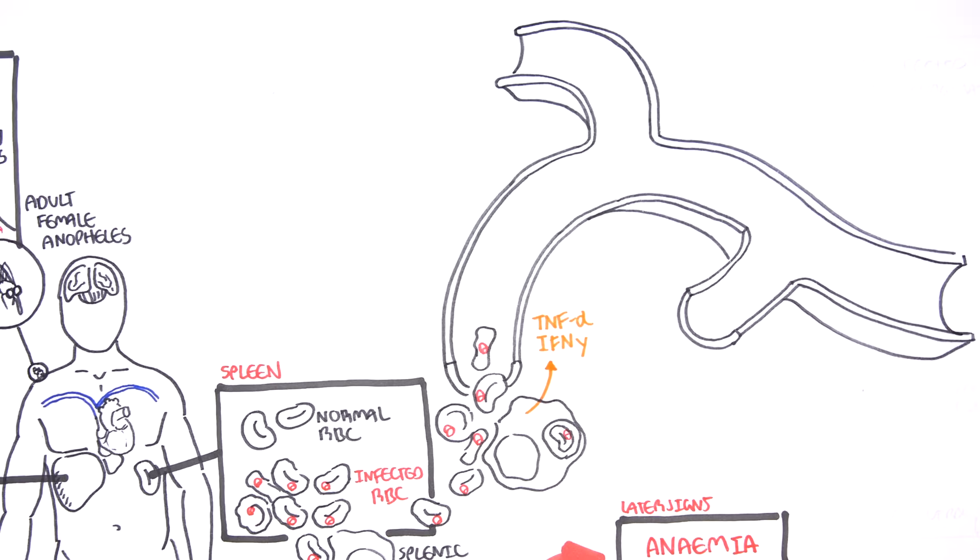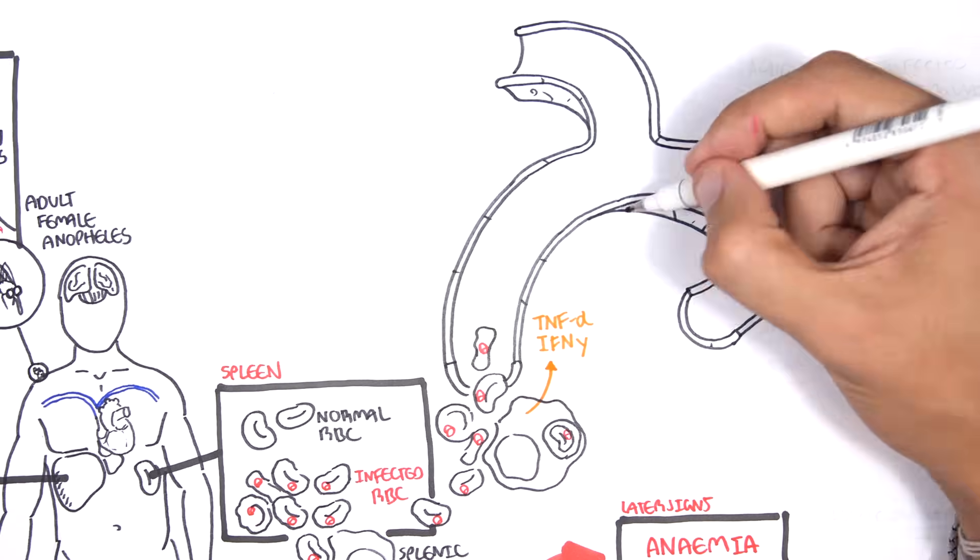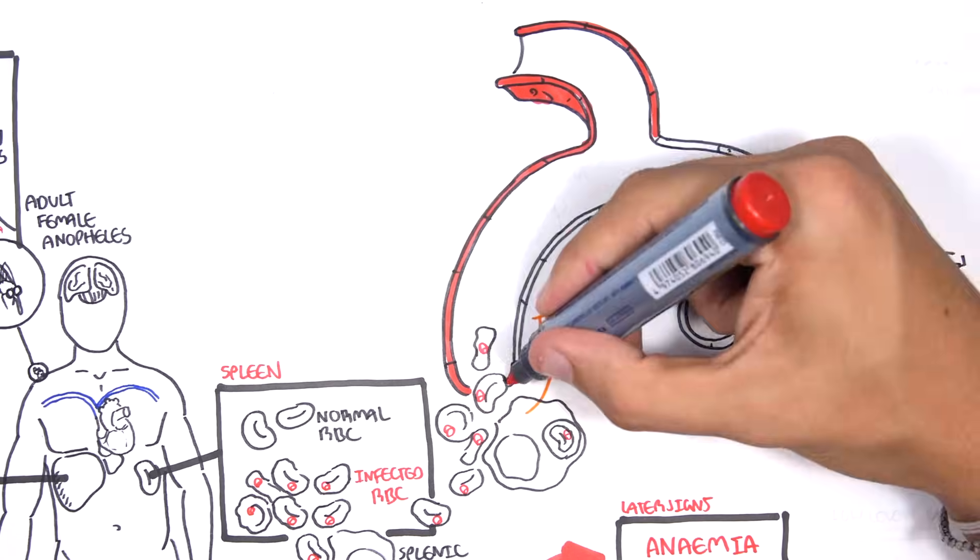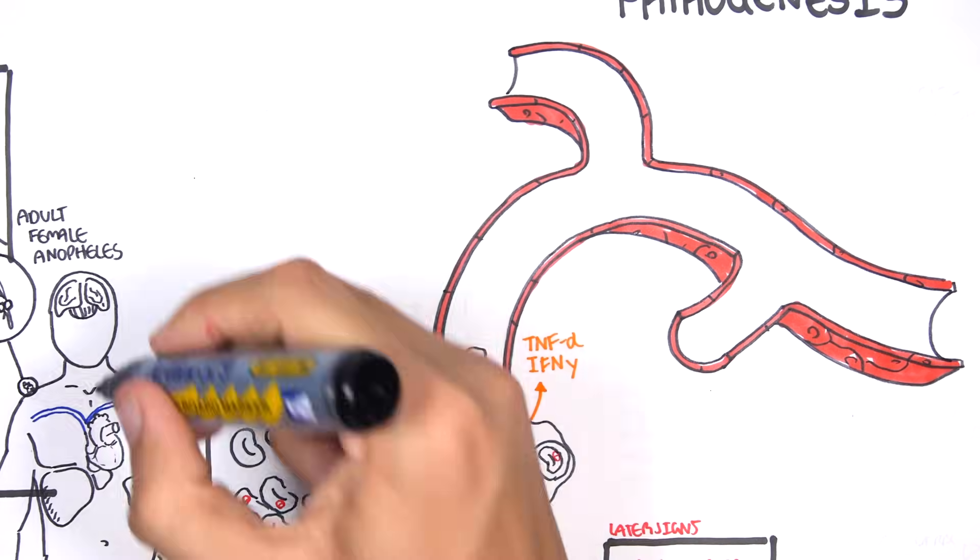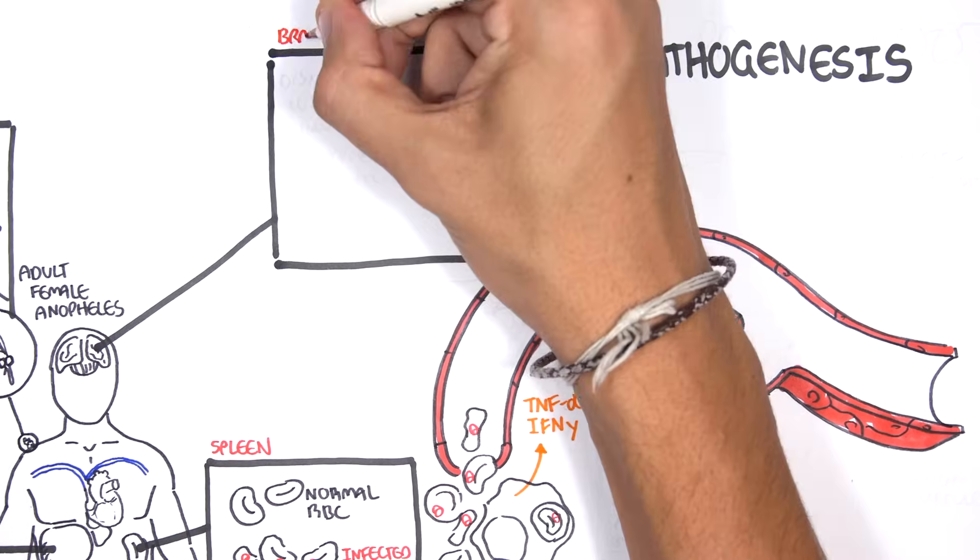This next event, this next pathological event, actually affects the blood vessels, small capillaries within organs, such as the brain, lungs, placenta, and the kidneys.